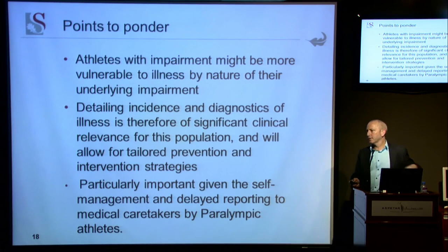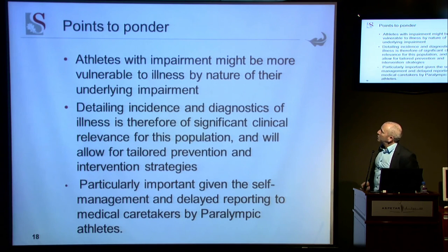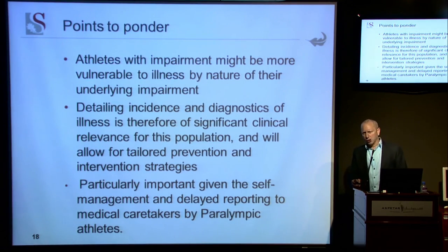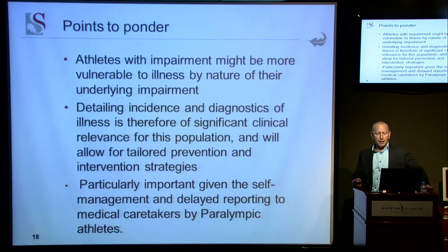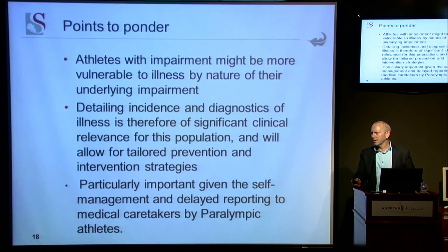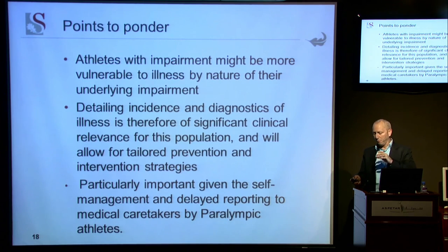I urge you to think about the following: athletes with impairment might be more vulnerable to illnesses by nature of their underlying impairment — whether related to the immune system or various subsystems, this area needs much more research. Detailing the incidence and diagnostics of illnesses is very significant in this population and will allow for more tailored prevention and intervention strategies. This is a unique group with self-management tendencies and delayed reporting. If there's one thing to take from this, please tell your athletes: if something's wrong, come see me sooner rather than later. That is the very first important step of prevention.